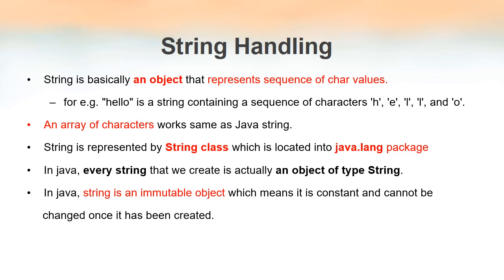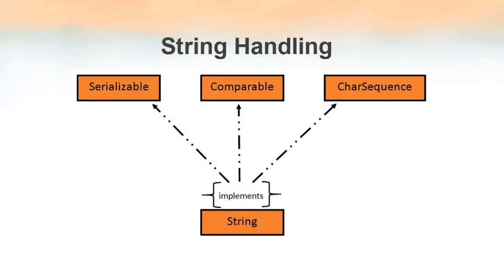If you are creating a string in Java, keep in mind that it is considered an immutable object — we cannot change it. We will see an example later to make this clearer. The String class in Java implements three interfaces: Serializable, Comparable, and CharSequence. A class can implement any number of interfaces at a time, which is how Java provides multiple inheritance.